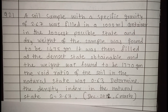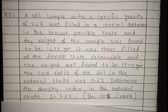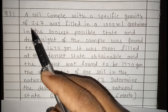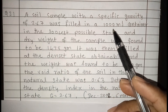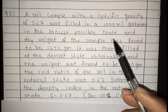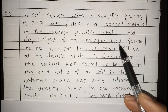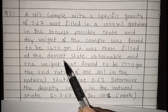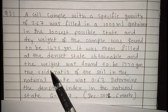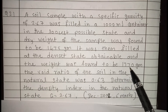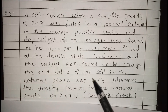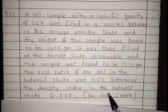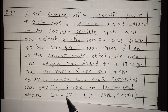We will see how to calculate relative density or density index. A soil sample with a specific gravity of 2.67 was filled in a 100 ml container in the loosest possible state, and the dry weight of the sample was found to be 1475 grams. It was then filled at the densest state obtainable and the weight was found to be 1770 grams. The void ratio of the soil in the natural state was 0.63. Determine the density index in the natural state.